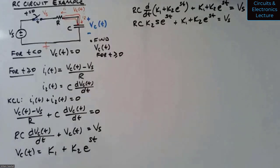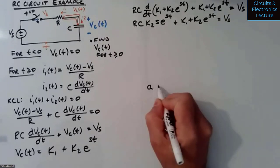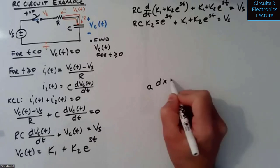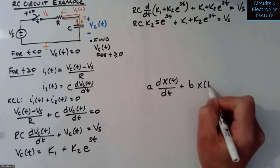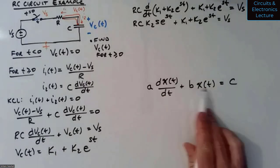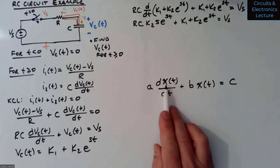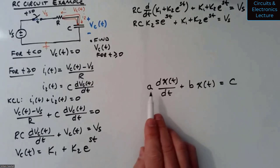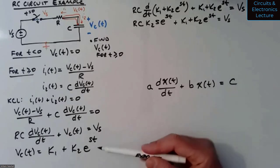Now let's rearrange so that we have a time-varying term plus a constant equals a constant. I want to get the e to the ST terms into one group. There's a K2 in both those terms — this term has R, C, and S, the other just has K2 e to the ST. So we get K2(RCS + 1) e to the ST plus K1 equals V_S. To confirm: K2 RCS e to the ST plus K2 e to the ST is K2(RCS + 1) e to the ST, and then K1 is left over, equaling V_S.